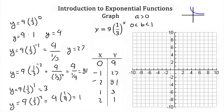Now I'll plot these points: (0, 9), (1, 3), and (2, 1) are on the chart, while (-1, 27) and (-2, 81) are off the axis. The graph must approach the x-axis without ever touching it and gets very large on the left. Connecting these with a smooth curve gives us the graph of y equal to 9 times one-third to the x. This completes our introduction to exponential functions.